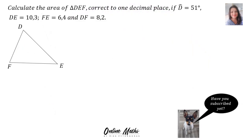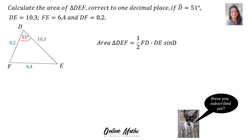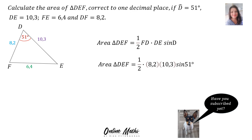Calculate the area of triangle DEF correct to one decimal place if angle D is 51 degrees, DE is 10.3, FE is 6.4, and DF is 8.2. We're going to use the area rule, but first we have to write the area rule for this specific situation. There are three sides and one angle, so the two sides we use must make that angle an included angle. Therefore the area of triangle DEF equals half times FD times DE times sin D. Substituting: half times 8.2 times 10.3 times sin 51 degrees.